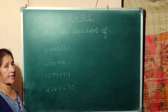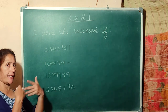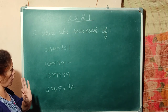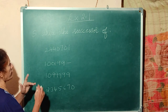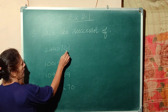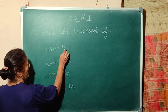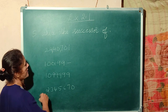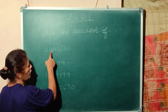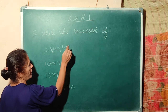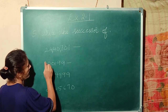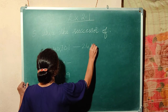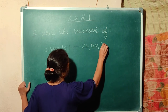What is the successor? Successor means the next number. We will put the comma and write down the successor. Reading the number: 24,40,701. What is the successor? 24,40,702.